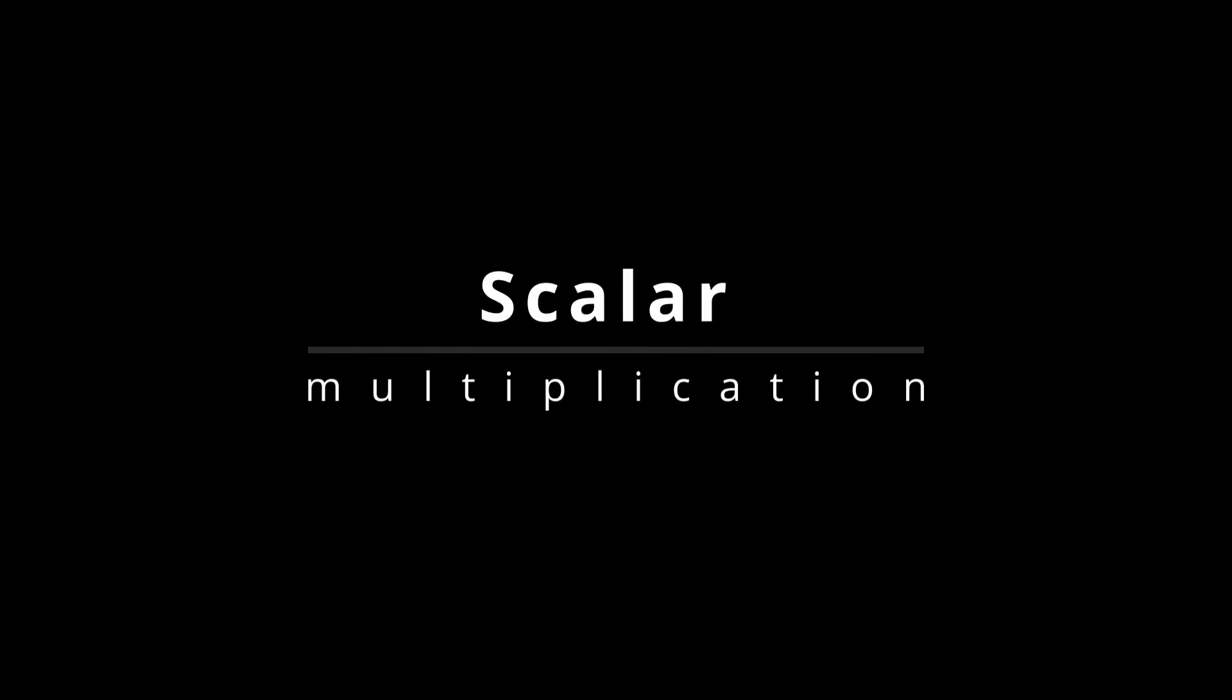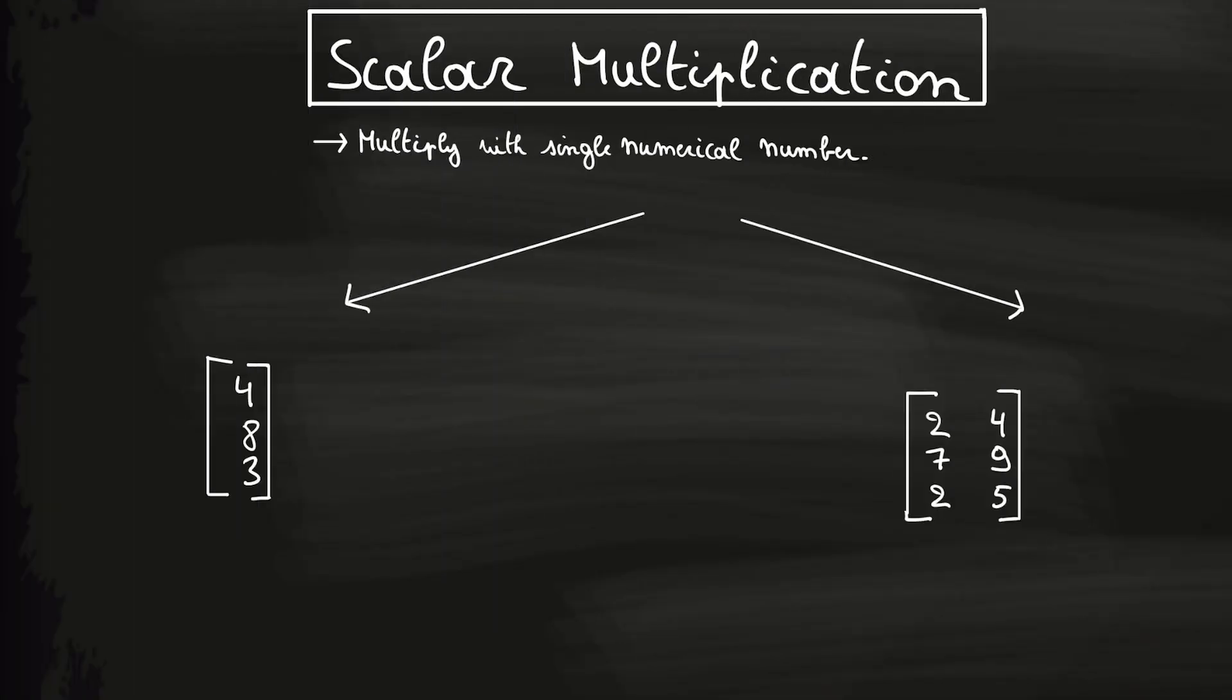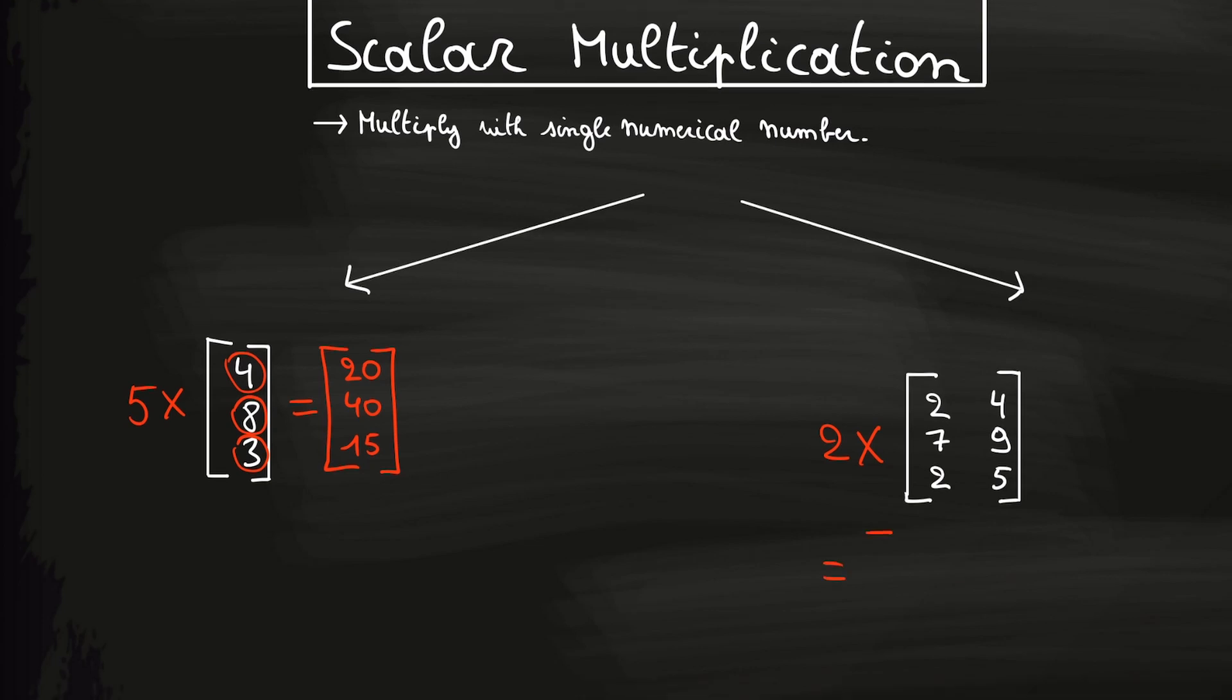We can also do a scalar multiplication, which means multiplying with a single numerical value. So for example, we can multiply this vector with 5 and this matrix with 2. Multiplication of a vector or matrix by a scalar involves multiplying each element by that scalar. It is very straightforward. We just take each element in the vector or matrix and multiply it with the scalar. Also for the matrix, you just multiply each element with the scalar.